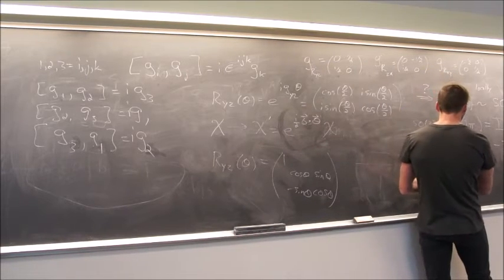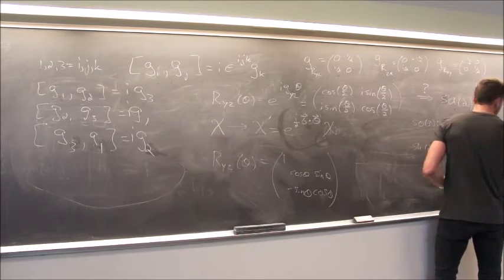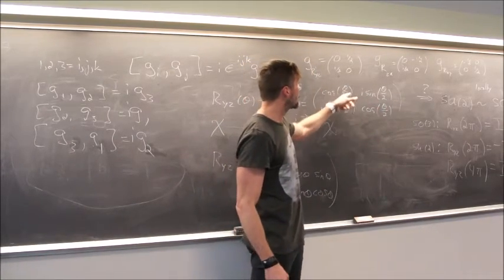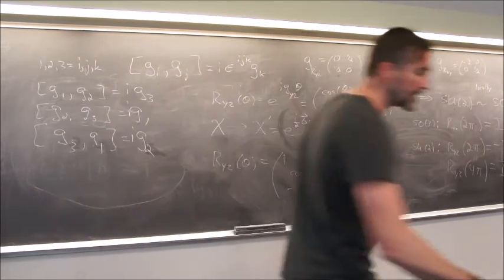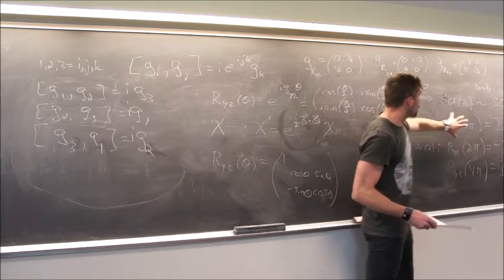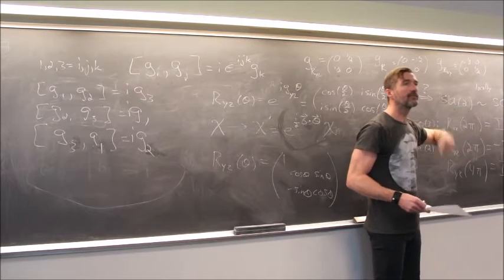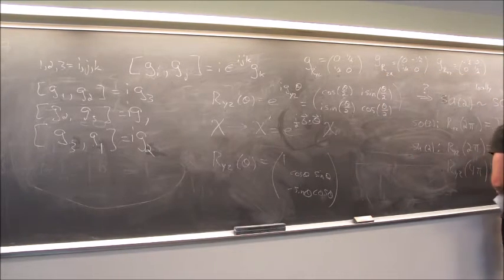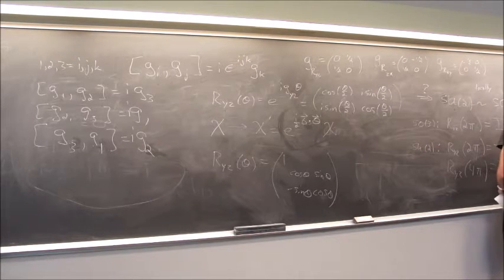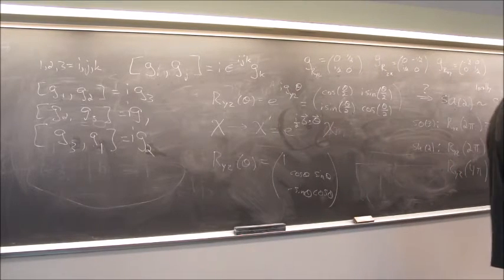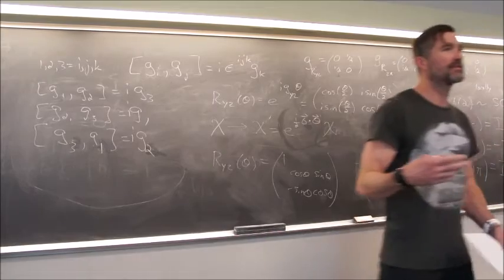In SU(2) you can get the identity if you go around twice: if you put in 4π, the arguments become 2π and you get something that reduces to the identity. So in one complete 0-to-2π sweep you cover the entirety of SO(3), but in 0 to 2π you only cover half of SU(2)—you've still got another half to go. The terminology is that SU(2) is the double cover of SO(3). Somehow SU(2) is twice SO(3).